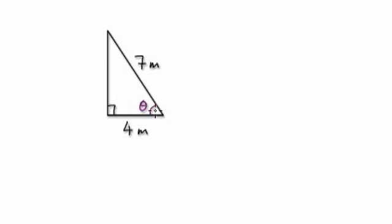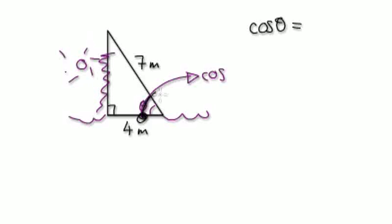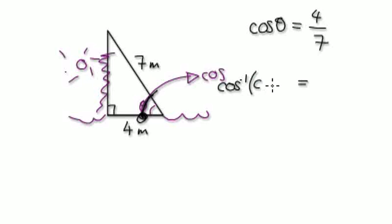Next one: you're trying to work out theta, the angle. So decide which one you need. The sun will be here, the C will be here. So we're going to need cos — because the opposite side is not in play. Write down our formula: cos of theta equals, well, you start at 4 and then hit 7, so 4 over 9. Now we inverse cos both sides, so cos to the minus 1 — these two cancel each other, giving theta equals cos to the power of minus 1 of 4 over 9.